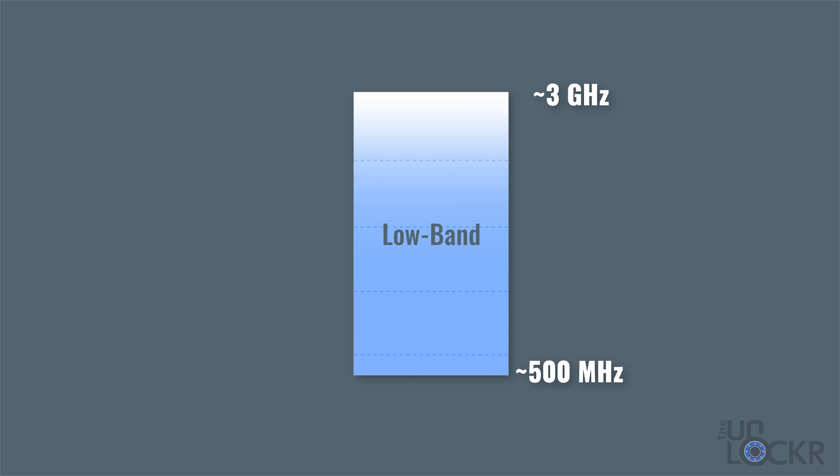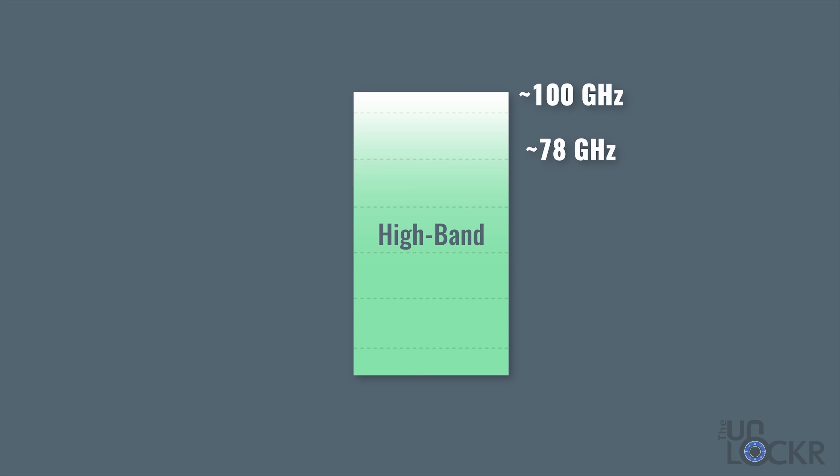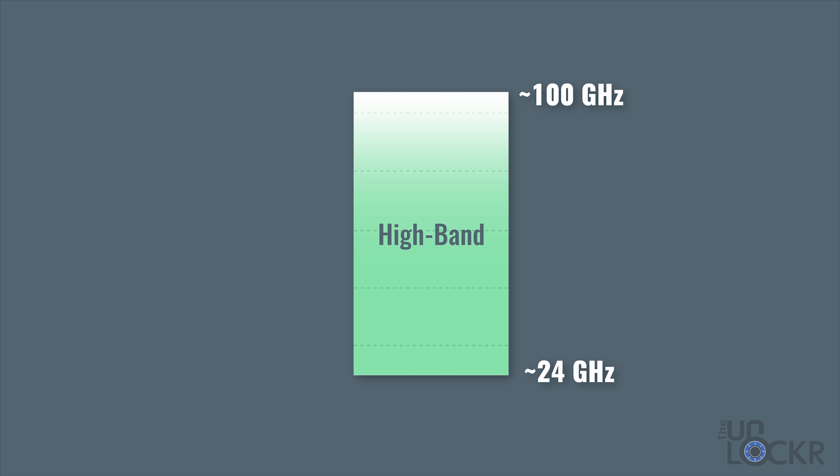These frequencies are broken down into three different groups for 5G: low band, sub-six — which is called mid band — and millimeter wave, which is often referred to as high band.